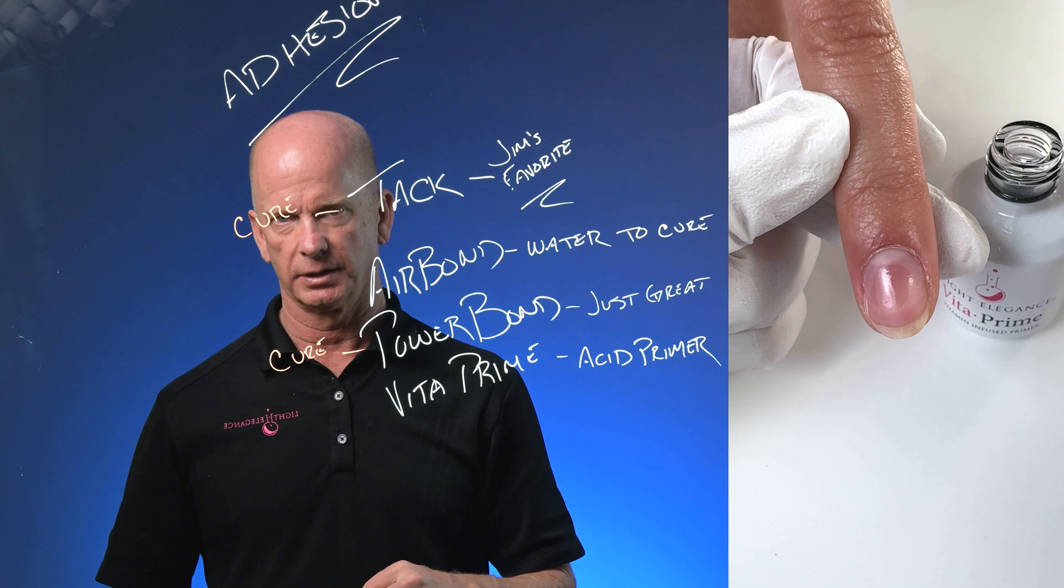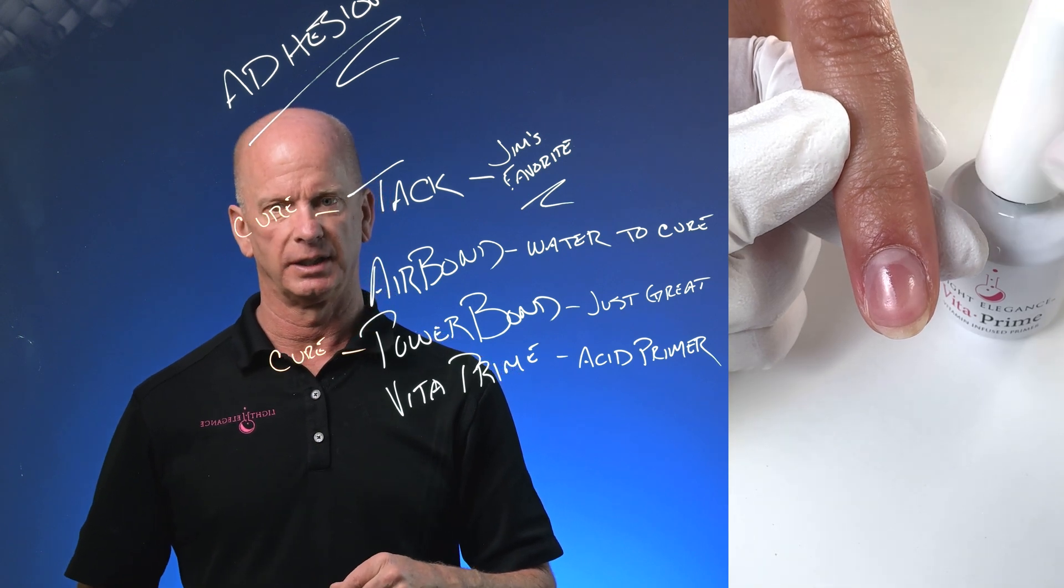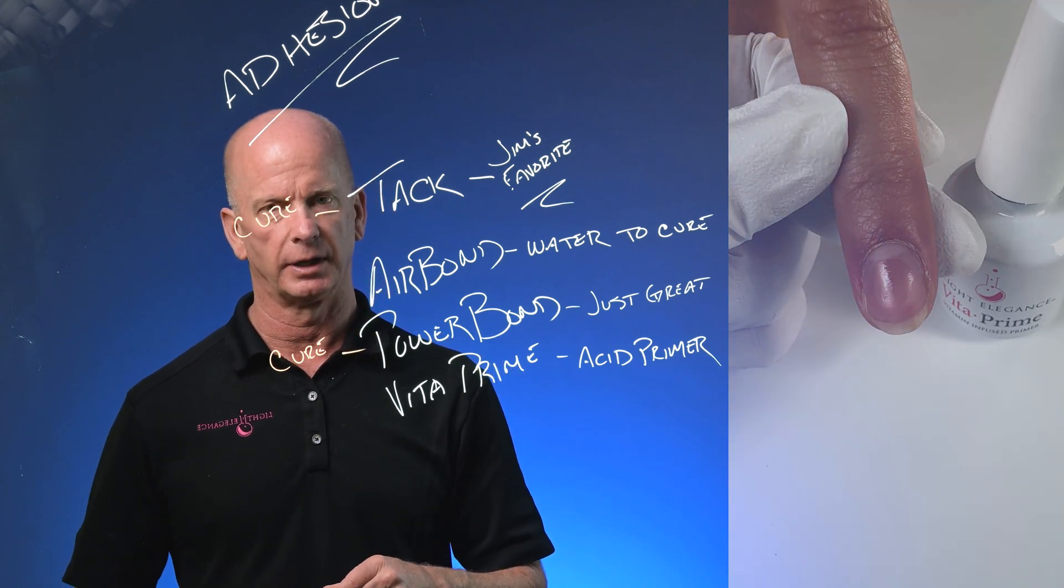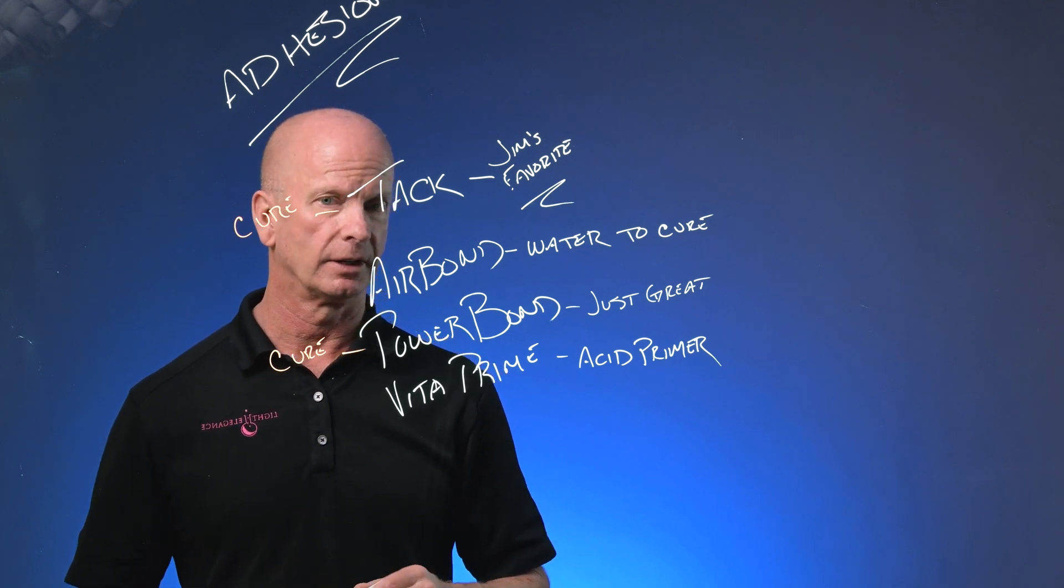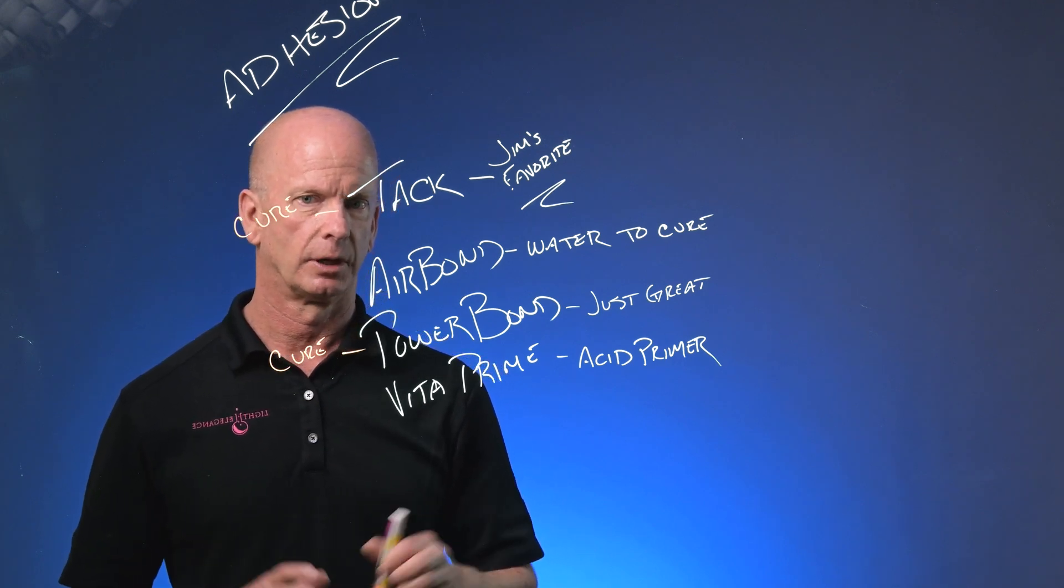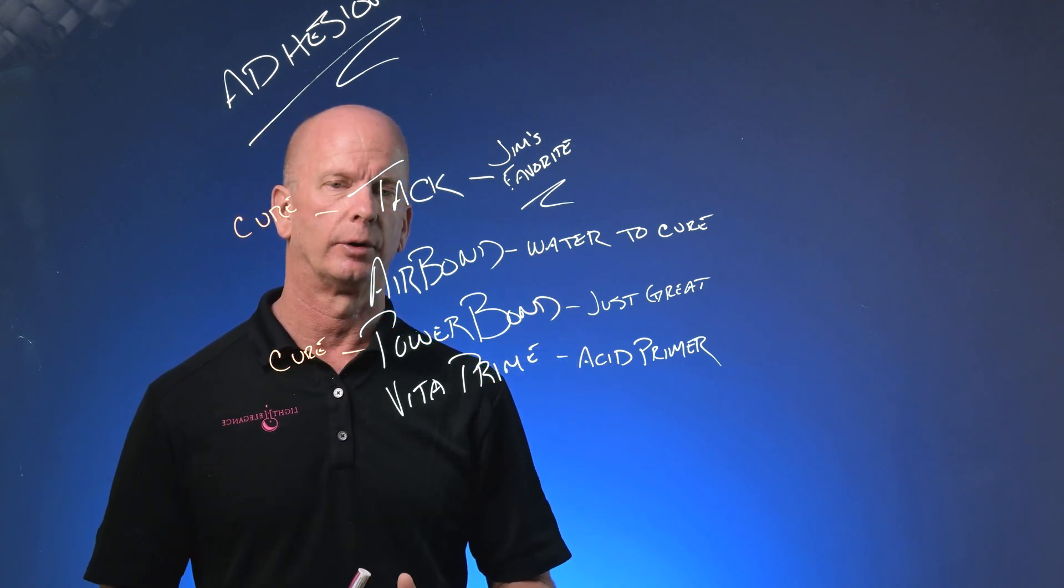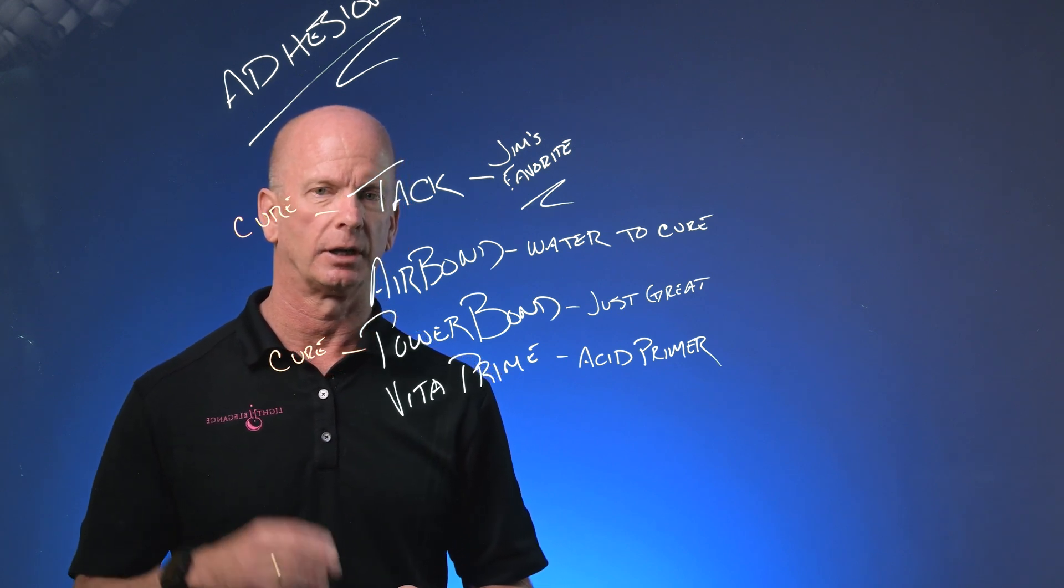Vita Prime is methacrylic acid and it will cause skin damage, burning of the skin if you get it onto the living tissue. Right on the actual fingernail itself, it causes no damage at all. So I'll use those and then I'll go ahead and build that nail up with whatever gel I'm going to apply on top.